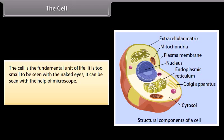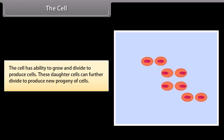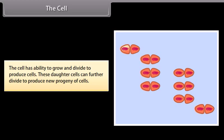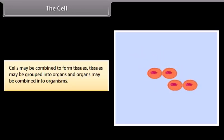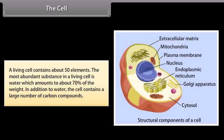The cell is the fundamental unit of life. It is too small to be seen with the naked eye and can be seen with the help of a microscope. Cells are packets of chemicals essential for life. The cell has the ability to grow and divide to produce daughter cells, which can further divide to produce new progeny. Cells may combine to form tissues, tissues into organs, and organs into organisms. A living cell contains about 50 elements; the most abundant substance is water, which amounts to about 70% of the weight. The cell also contains a large number of carbon compounds.